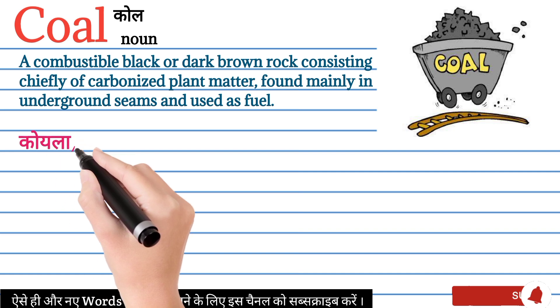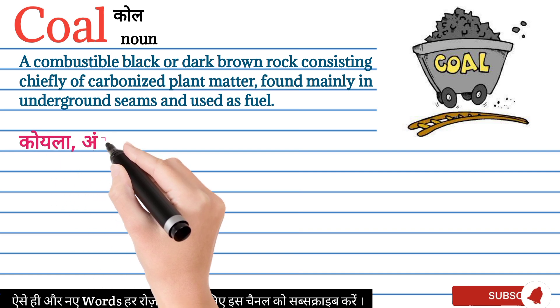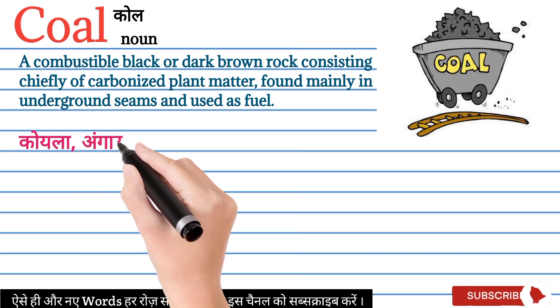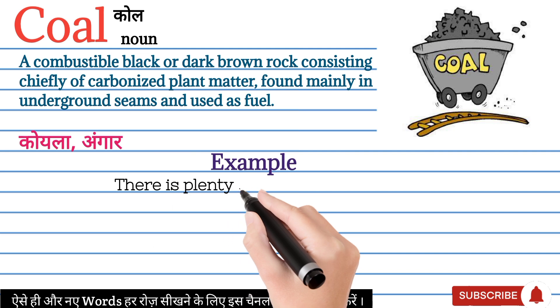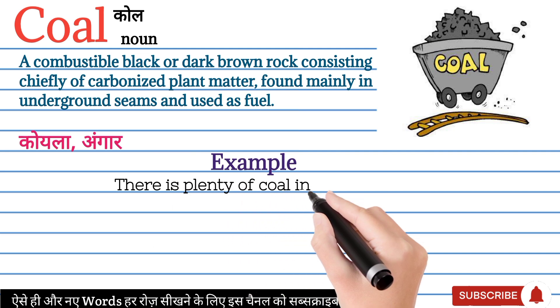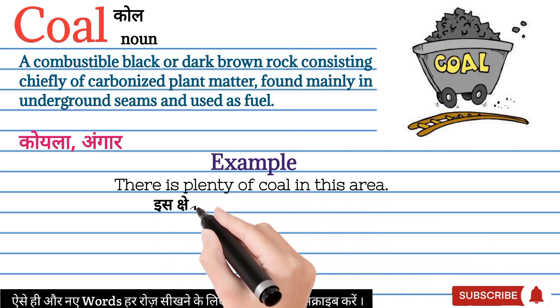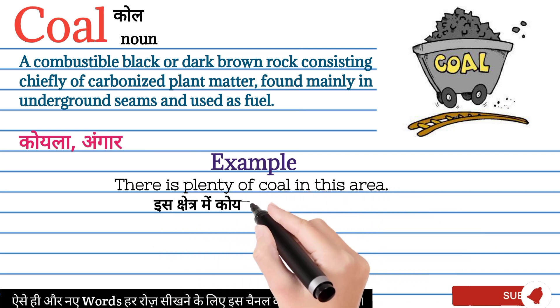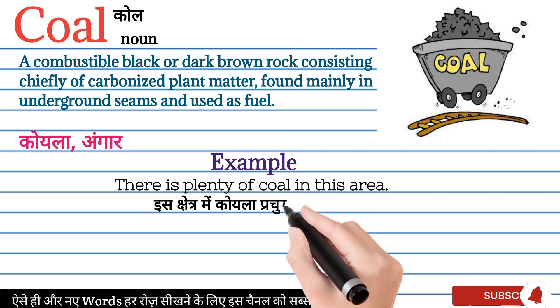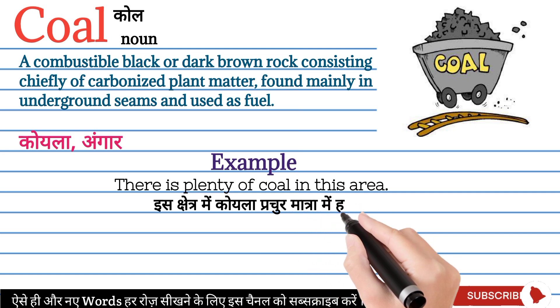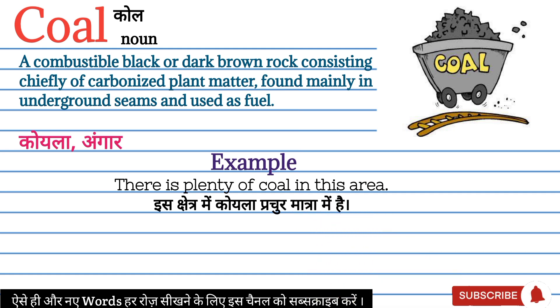Coal ko lekar examples se sentences mein achha se samaj lete hai. There is plenty of coal in this area. Is kshetra mein koela prachur matra mein hai. His face was blackened with coal. Uska chehra koela se kaala kar diya gaya tha.